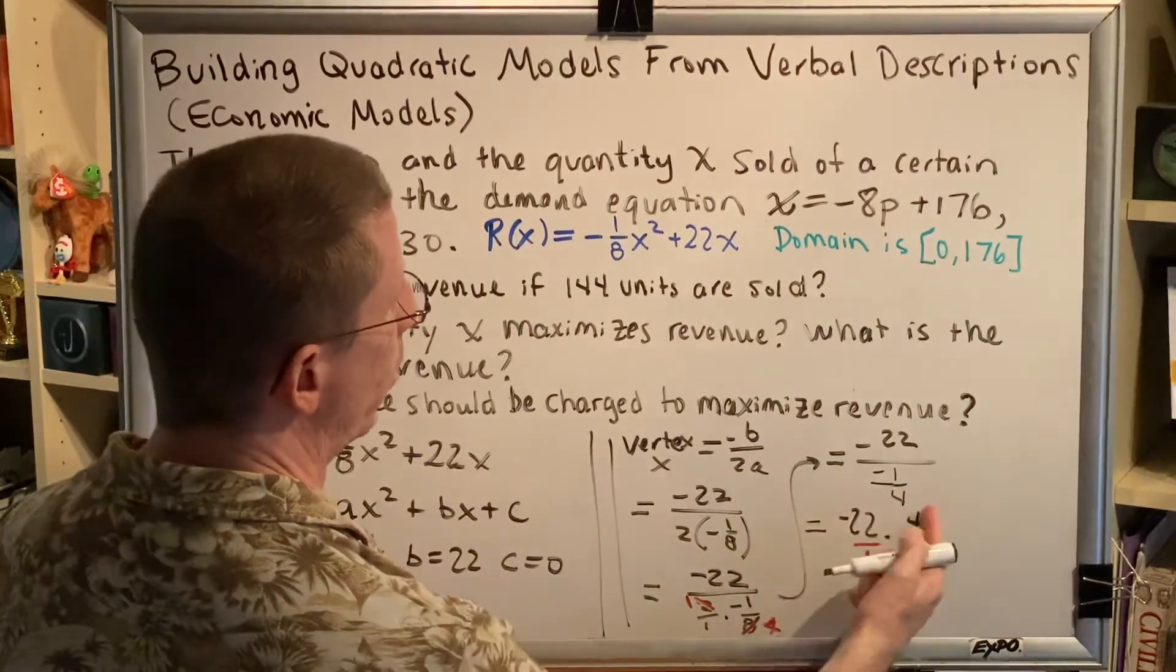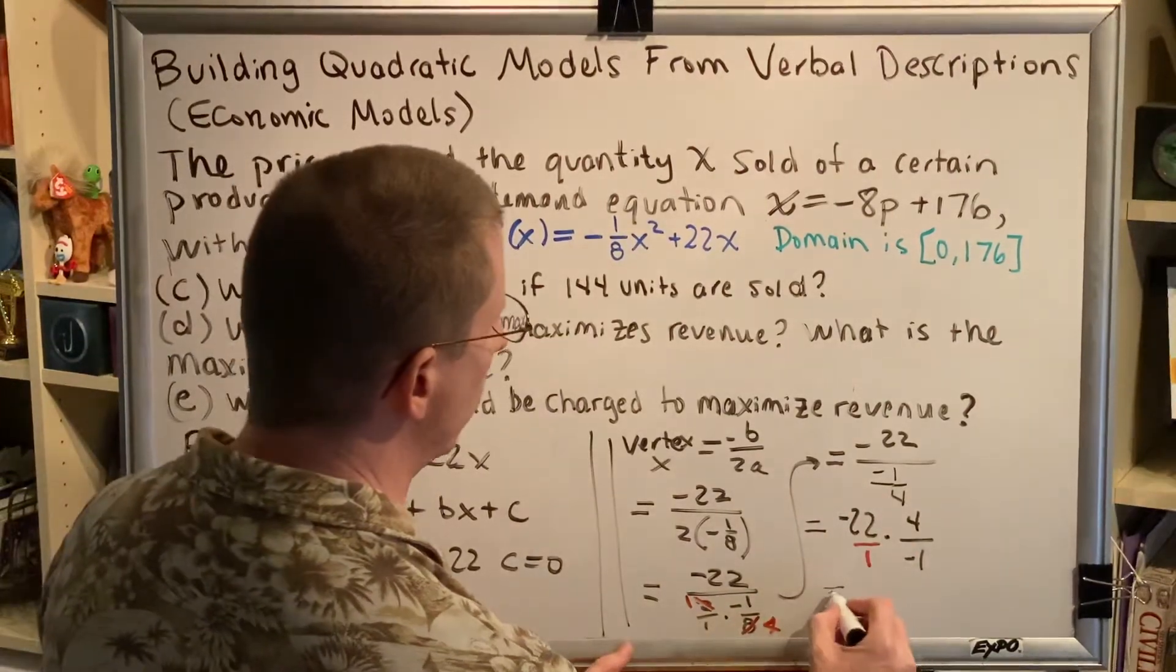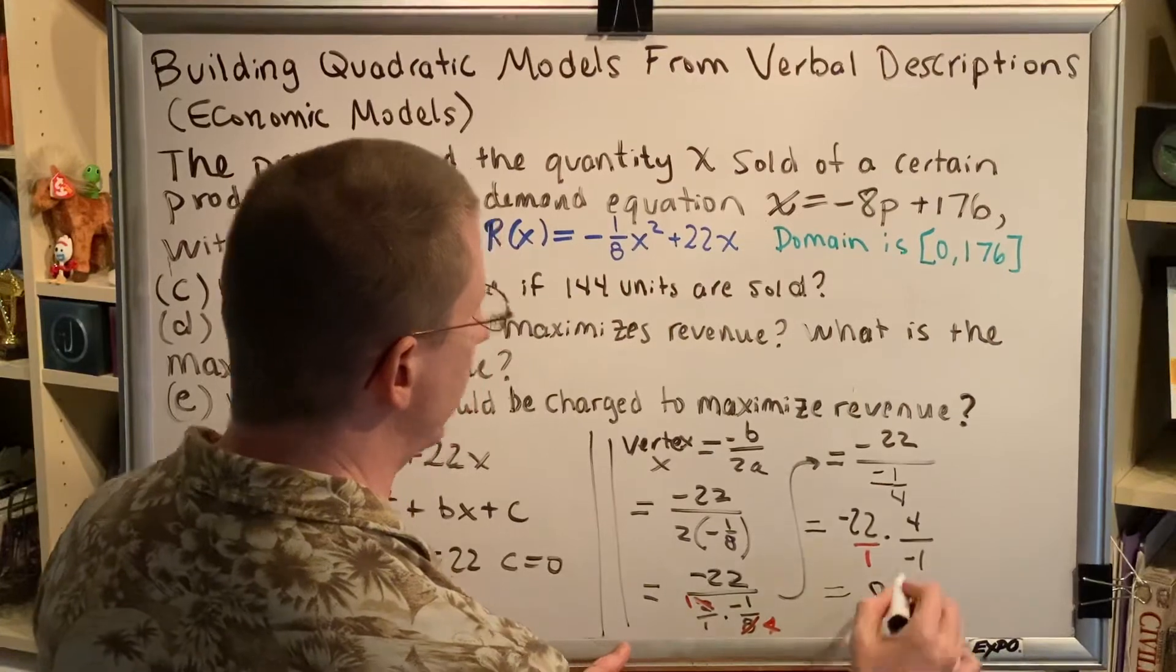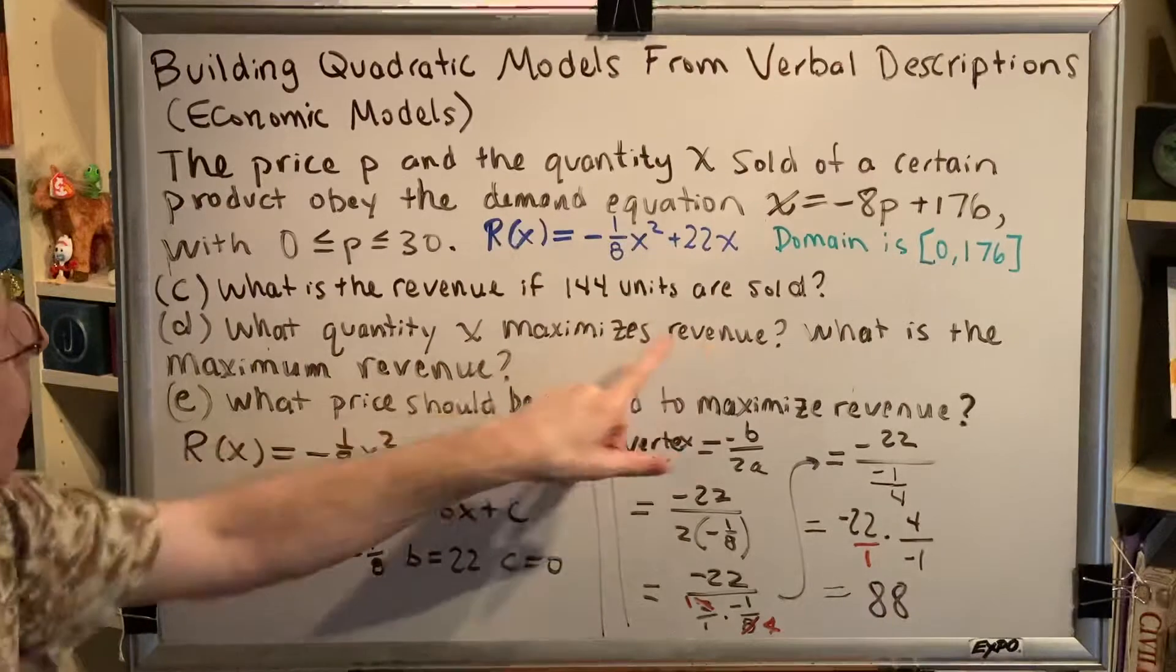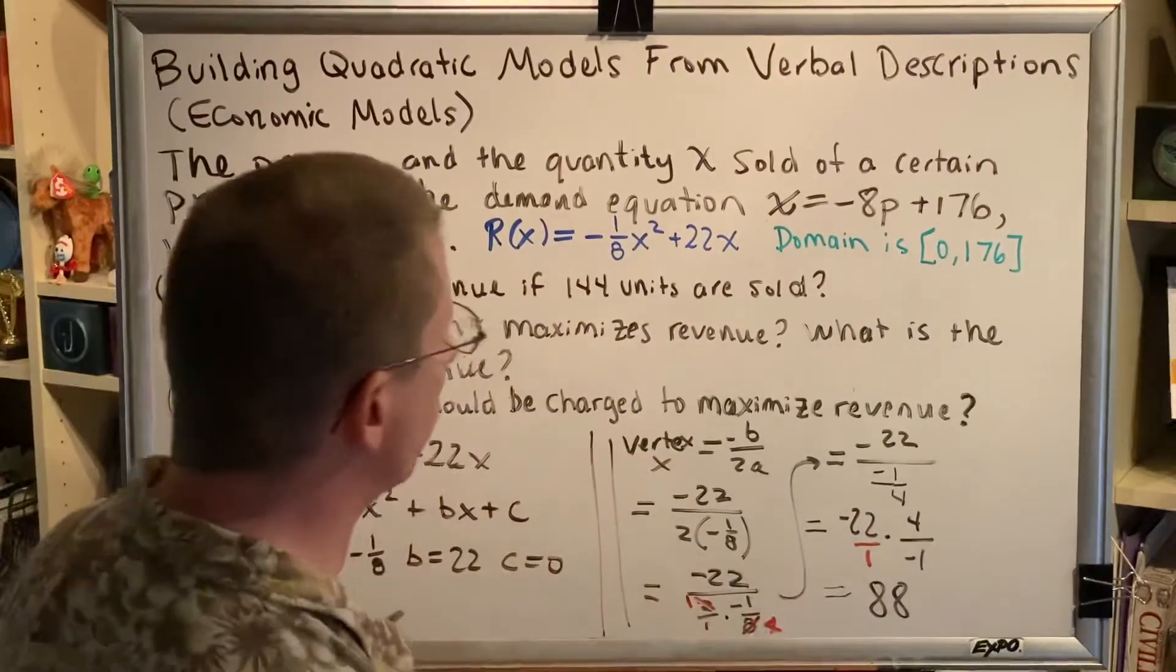So, I just have to multiply the numerators. And 4 times 22 is 88. So, the vertex x is 88. That answers the first question. What quantity x maximizes revenue? x equals 88.